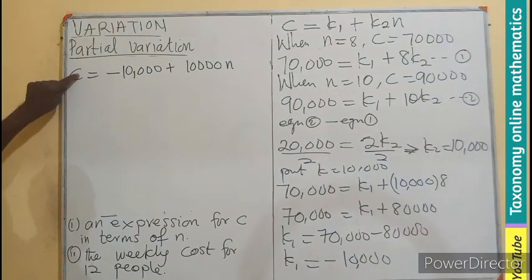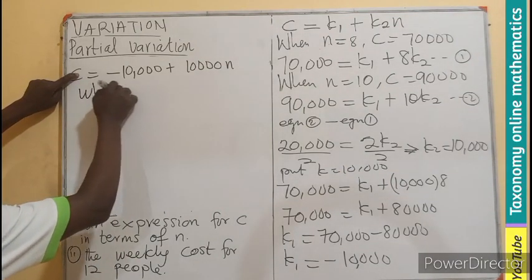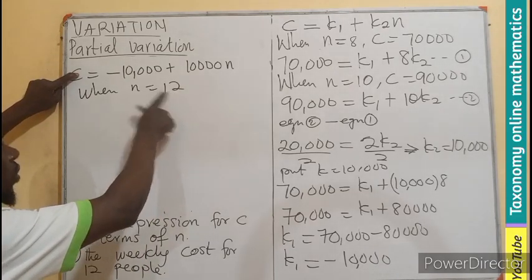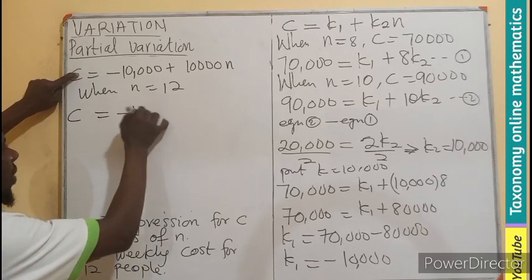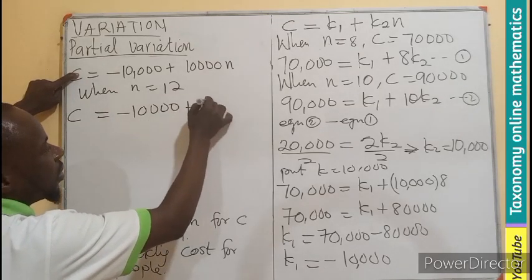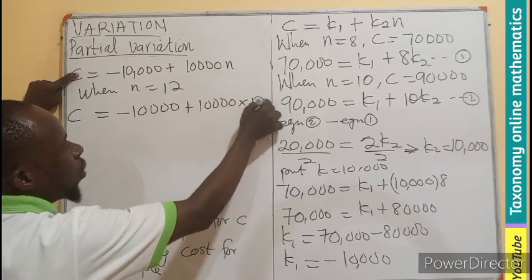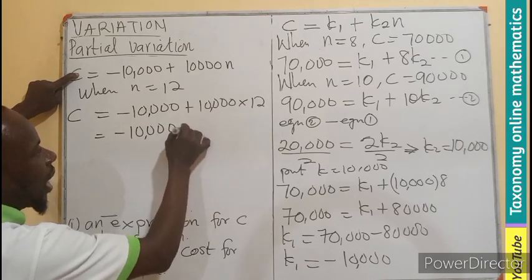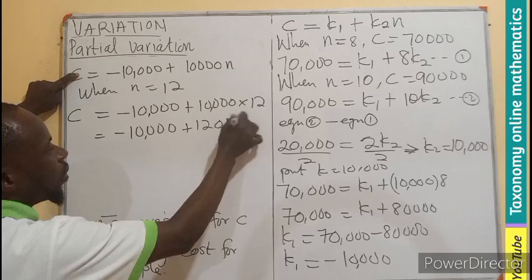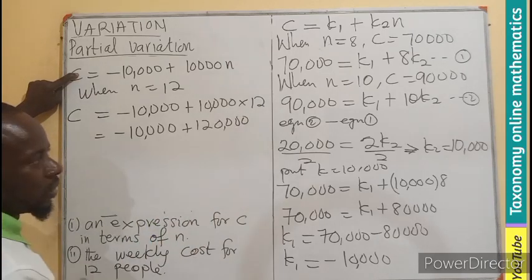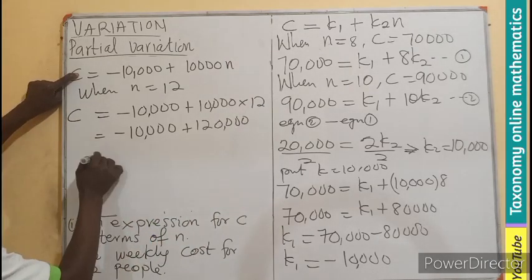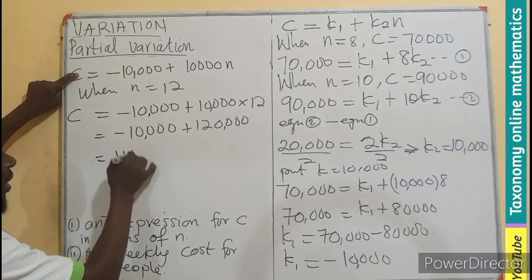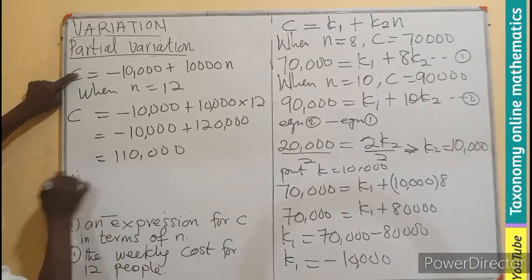What are we looking for? We're going to look for the cost when n is 12. So for 12 people, C will be negative 10,000 plus 10,000 times 12, which is 120,000. If you subtract 10,000 from 120,000, you're left with 110,000.